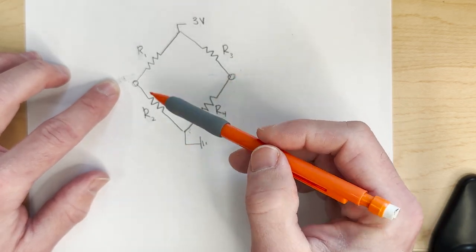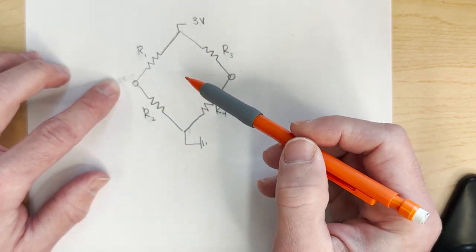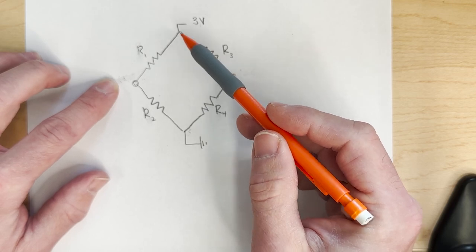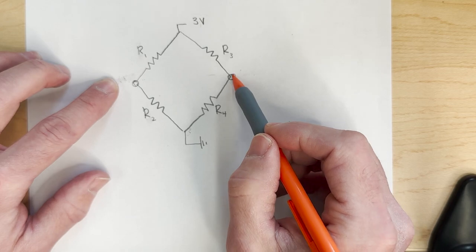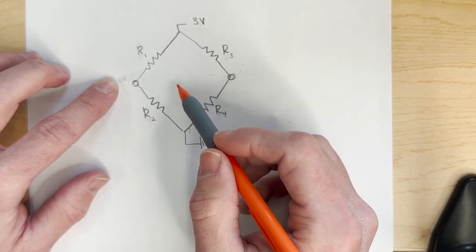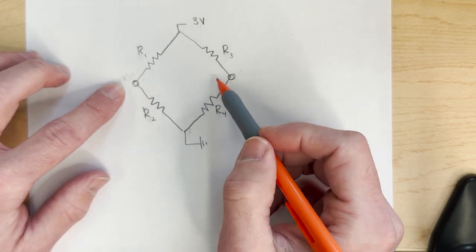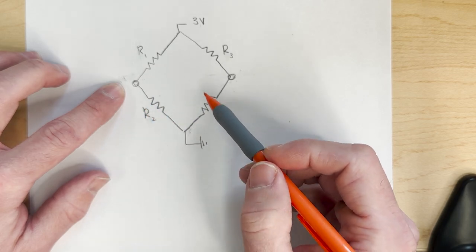Now if it's balanced and then you apply a load, the resistance values change. Very small resistance value changes here will result in when we measure the voltage across here to read a value other than zero, and that's how this strain gauge circuit works.